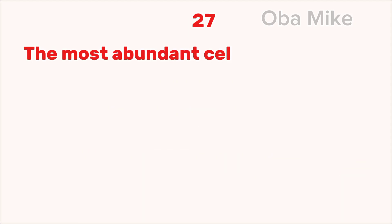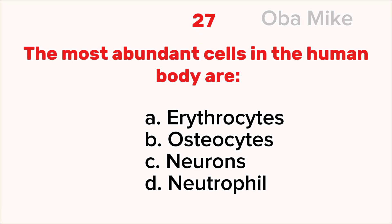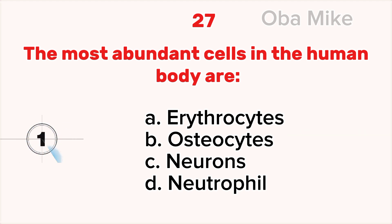27. The most abundant cells in the human body are A. Erythrocytes, B. Osteocytes, C. Neuron, D. Neutrophil. The correct answer is A. Erythrocytes.